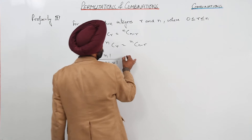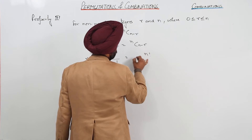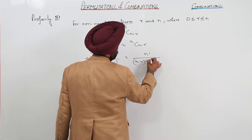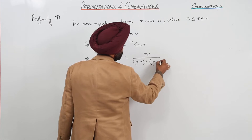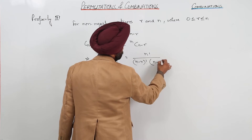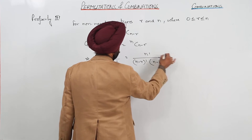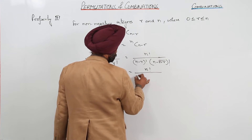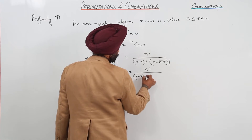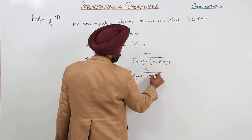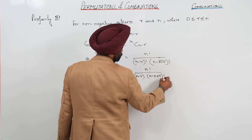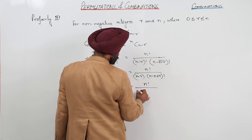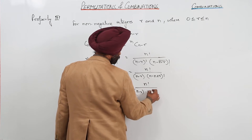To that part, we can write it as n factorial upon n minus r factorial, then n minus (n minus r) factorial. This is equal to n factorial upon n minus r factorial with n minus n plus r factorial, which simplifies to n factorial upon n minus r and r factorial.